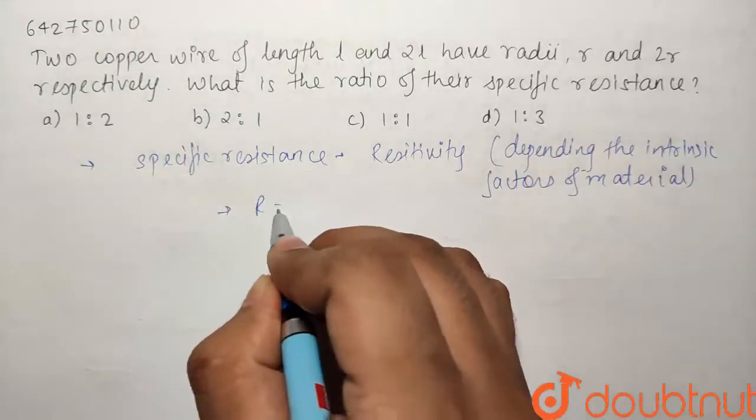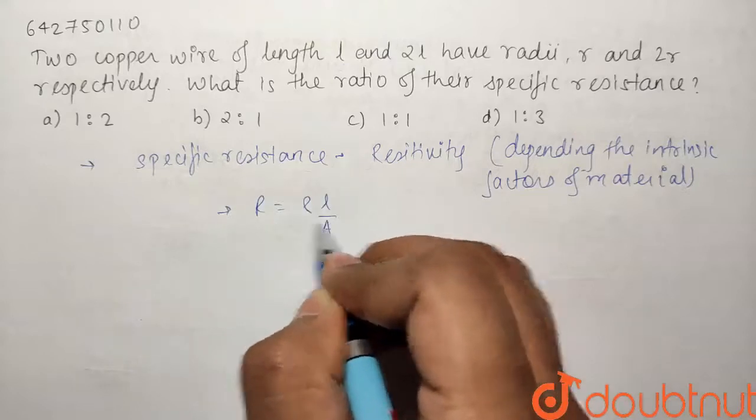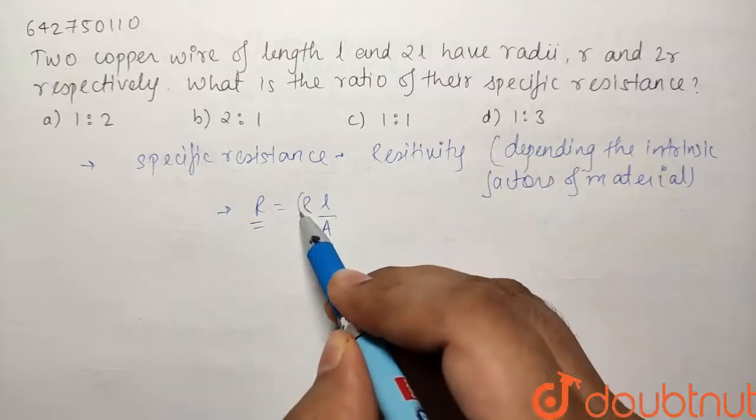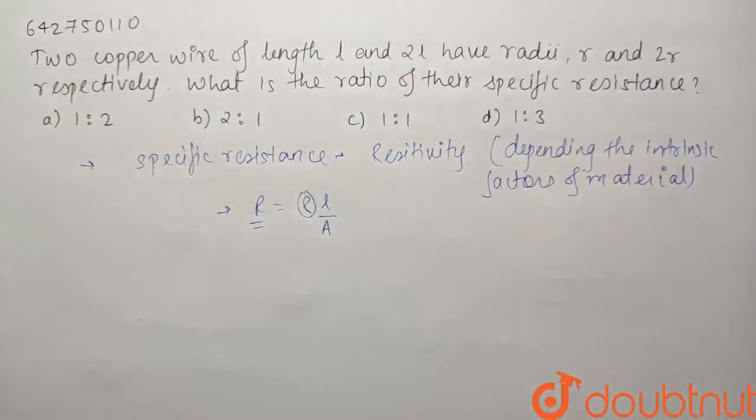And we know that resistance is equal to what? Rho L by A. So it is the resistance which is dependent on the length and the area. But our resistivity, Rho, is something that is only depending on the type of material that is being used.